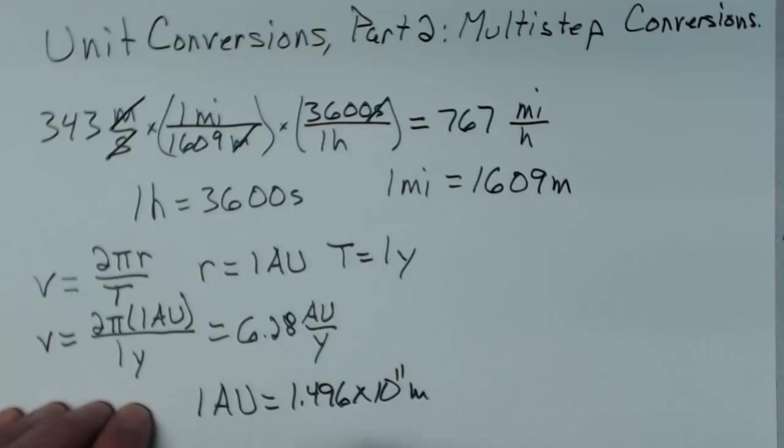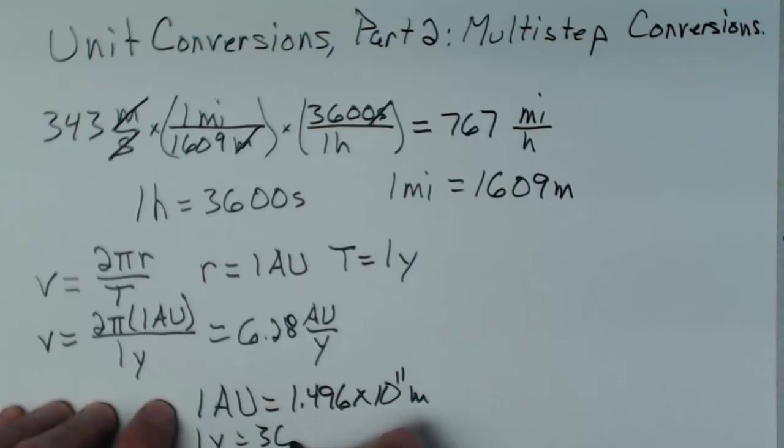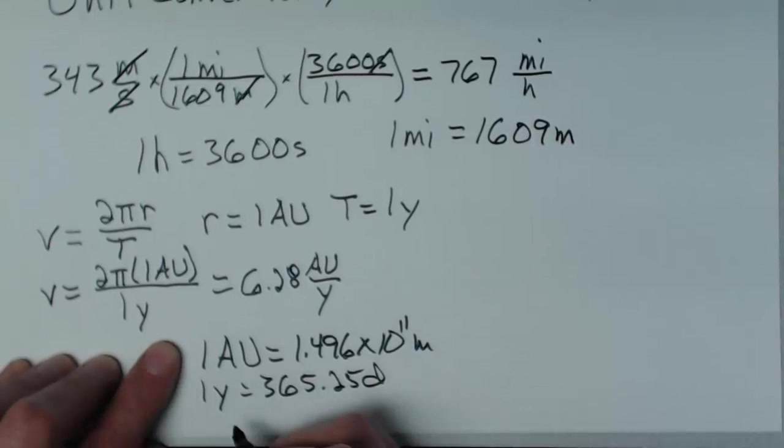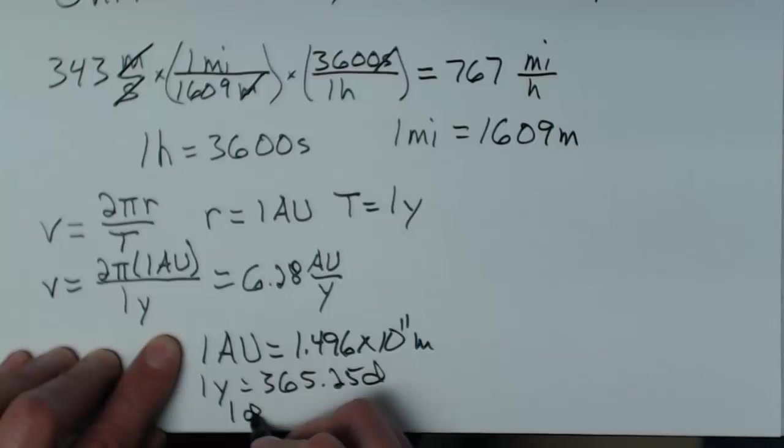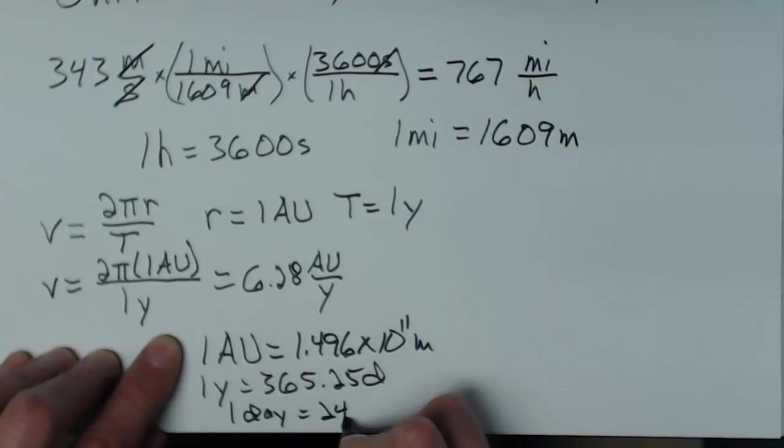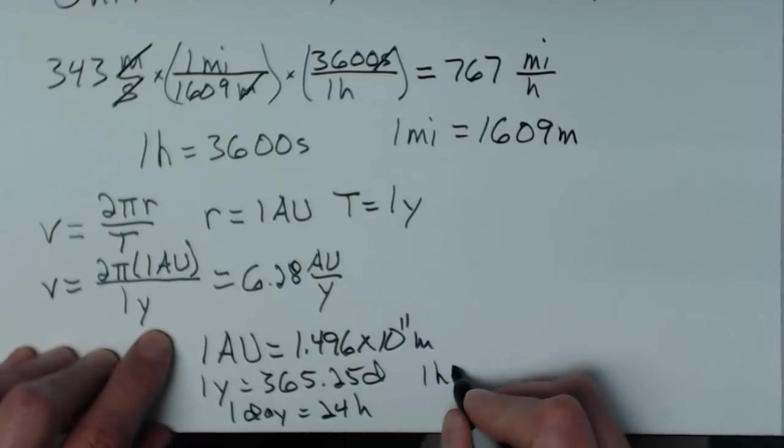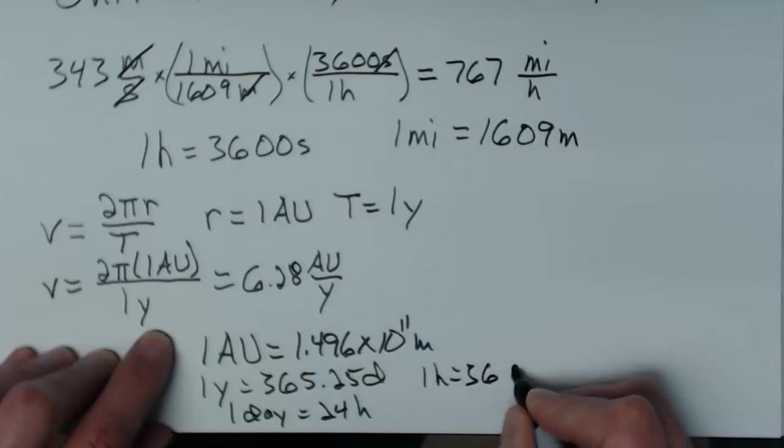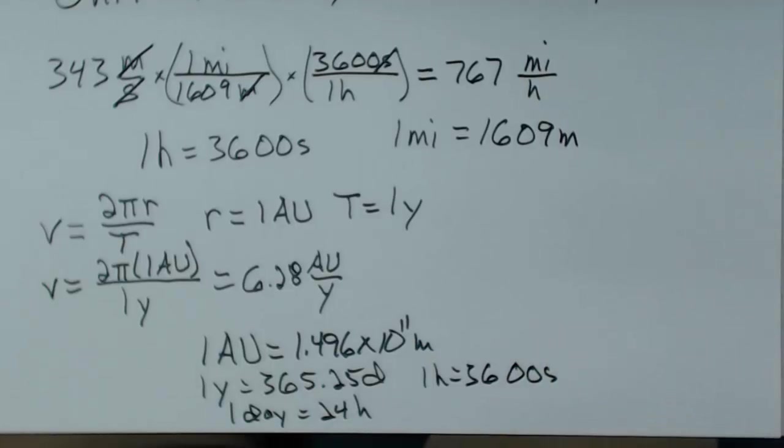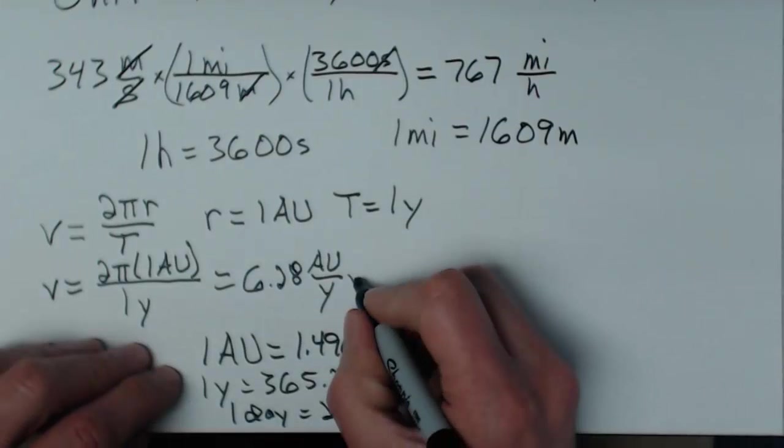But I have to know that one year is equal to 365.25 days. One day equals 24 hours. And I used something up here before that one hour is 3600 seconds. So I need to use all of these things to be able to convert from astronomical units per year to meters per second. And let's figure this out.